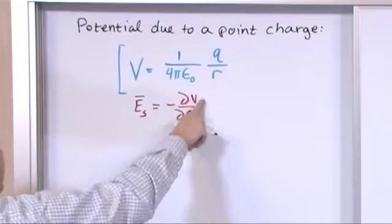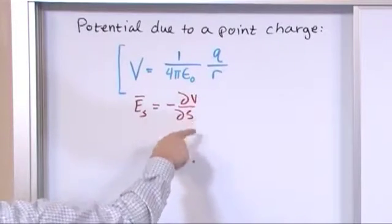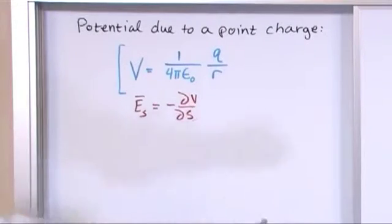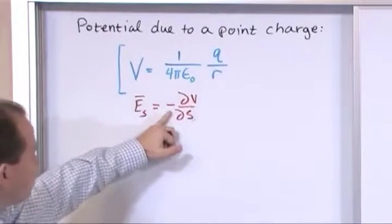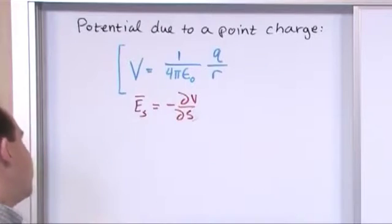So basically if you take the derivative of the potential in whatever direction you're looking, x, y, z, r, it doesn't matter, whatever variable you happen to be looking at, if you take that partial, slap a negative in front, that should give you the electric field strength. So let's do that.